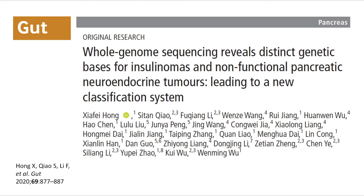Pancreatic neuroendocrine tumors, PANETs, are heterogeneous with different hormone secretion functions and metastatic potentials, but the genetic basis for such differences are not fully clear. Our recent work published in Gut focused on the genetic basis of the two most common types of PANETs: insulinomas and non-functional PANETs, NF-PANETs.